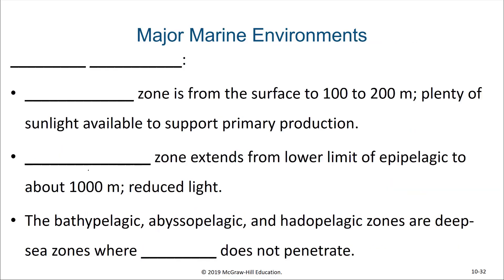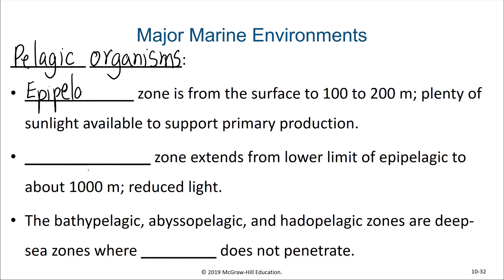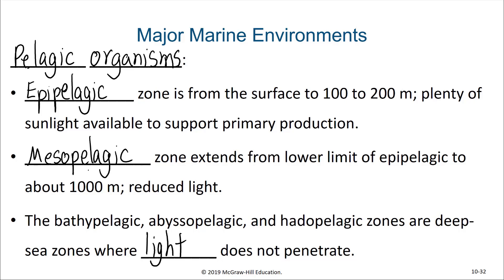For pelagic organisms, the epipelagic zone encompasses the surface waters from the surface to about 100–200 meters, with plenty of sunlight available to support photosynthesis as the main means of primary production. The mesopelagic extends from the lower limits of the epipelagic to about 1,000 meters, where light is reduced but can still be detected, though not enough for photosynthesis. In the bathypelagic, abyssopelagic, and hadopelagic zones, these are deep-sea zones where light does not penetrate, yet free-swimming organisms can still be found.